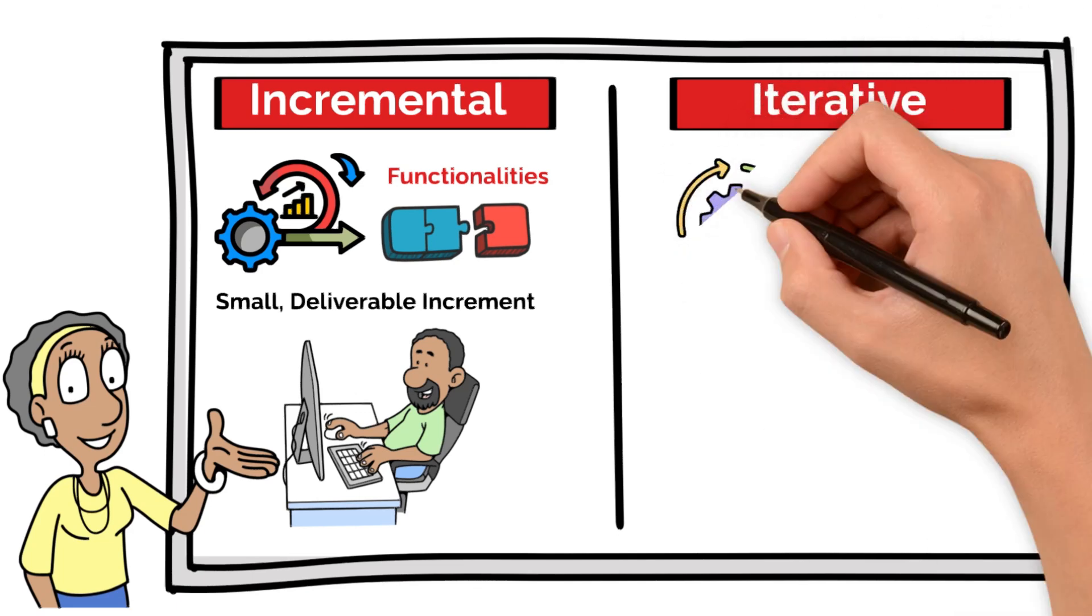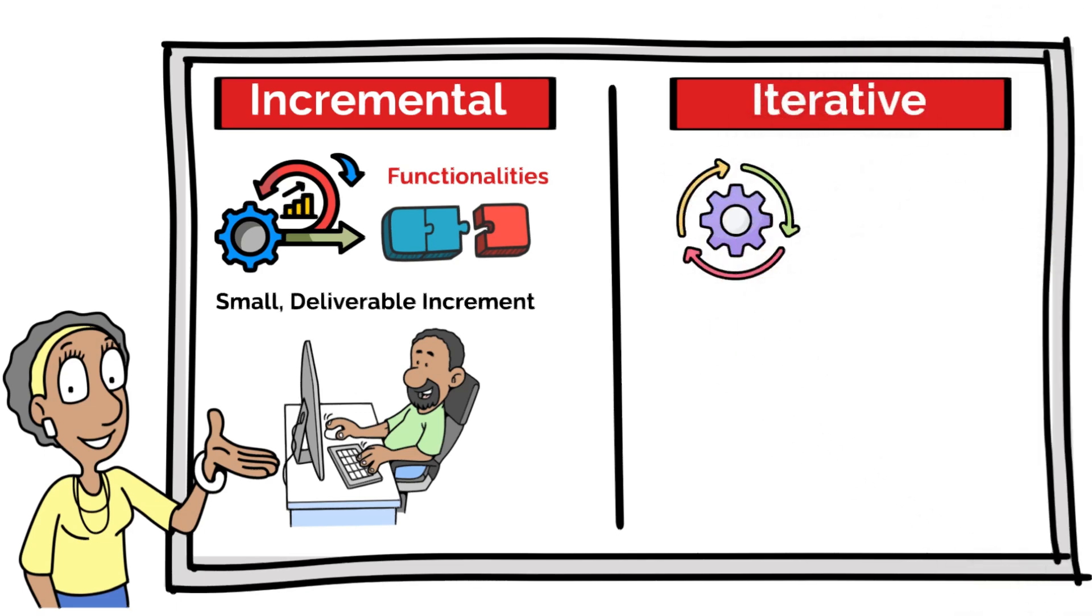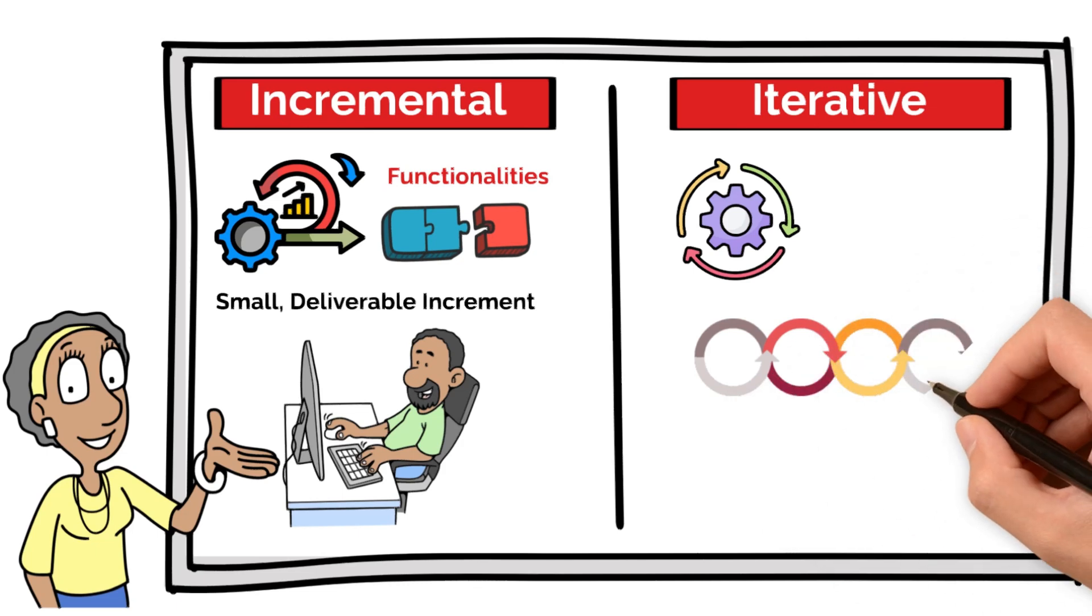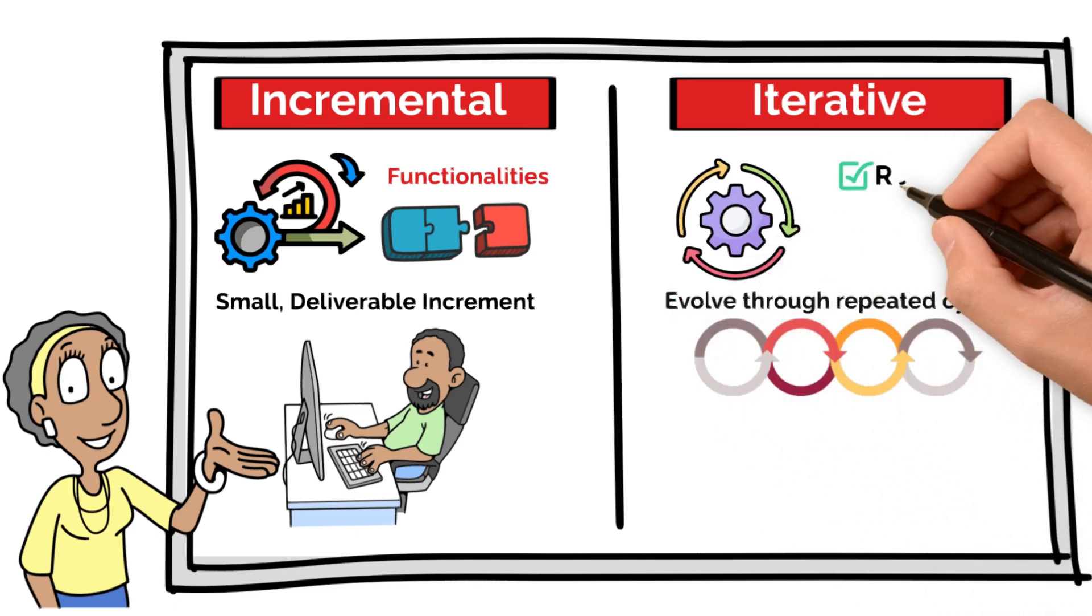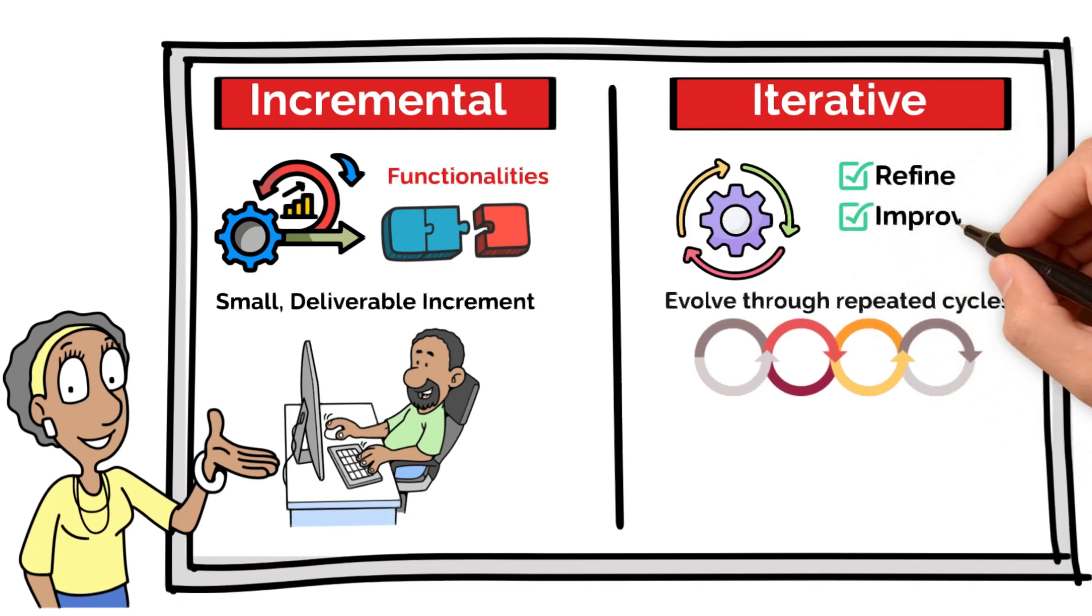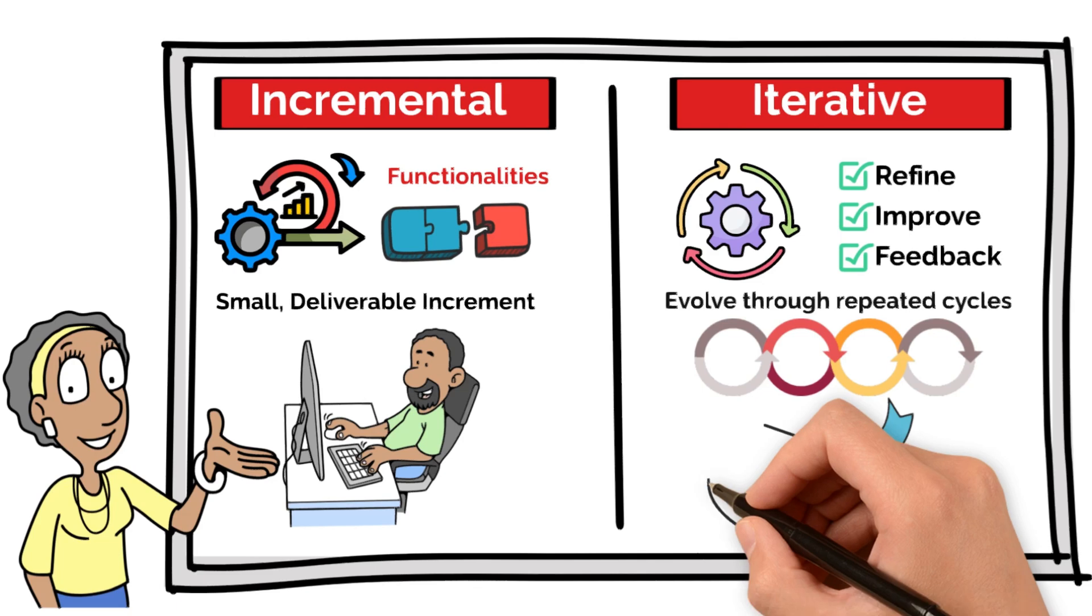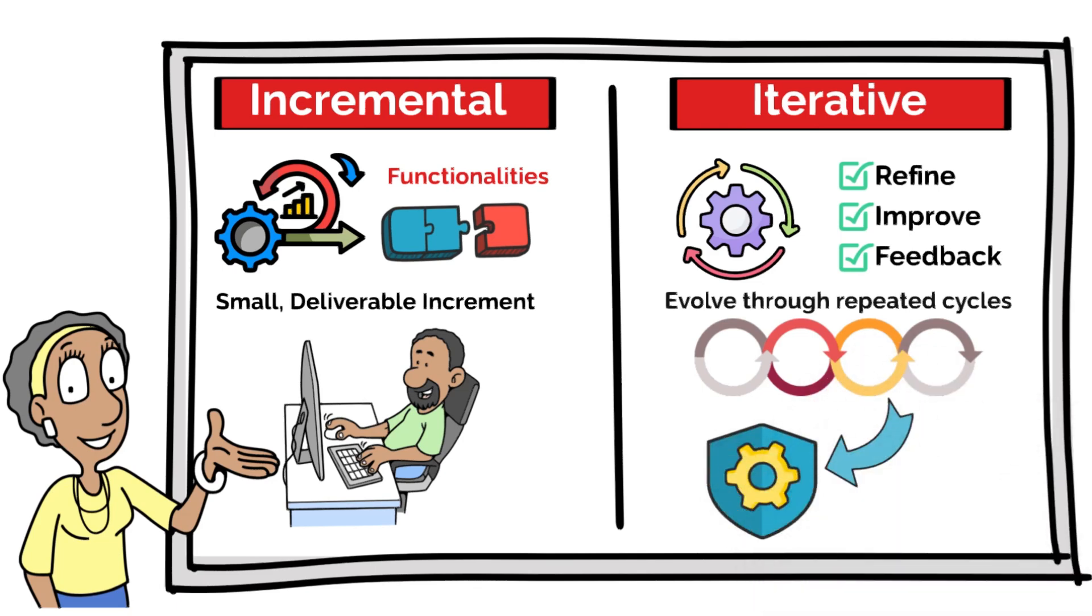The iterative model, on the other hand, is more about cycles. Instead of delivering completed parts each time, you're evolving the product through repeated cycles, focusing on refining and improving each version based on feedback. Each cycle builds on the last one, so the product slowly grows into its final form with adjustments and enhancements along the way.